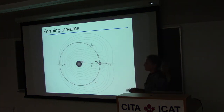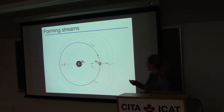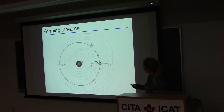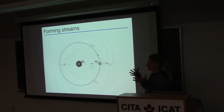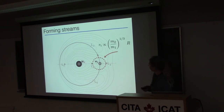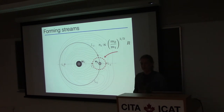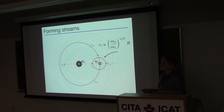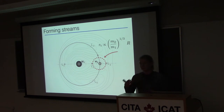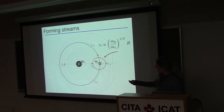You can understand the formation of streams from dwarf galaxies or globular clusters from this type of scenario. If M1 is some host potential like the Milky Way, and M2 is some globular cluster or dwarf galaxy, you'll have these areas — Lagrange points — where a star would feel the underlying galactic potential just as strongly as its own host potential. At these Lagrange points, stars can escape from a globular cluster and continue to evolve due to the underlying potential. In a more realistic scenario, you'll have eccentric orbits and more complex potentials, but all of these things can be accounted for in simulations.